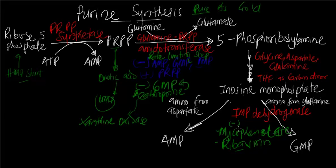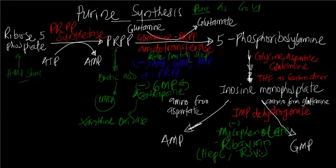Mycophenolate is also used for the same indications: to prevent organ rejection, for lupus nephritis, and for psoriatic arthritis. Ribavirin is used for RSV and can also be used for hepatitis C. You can also use palivizumab for RSV — we'll have to talk about that when we get to microbiology.